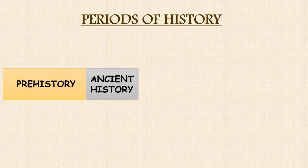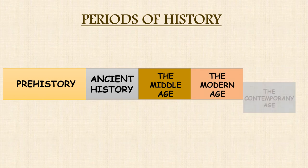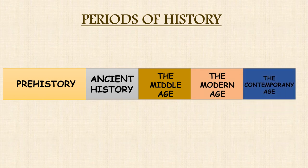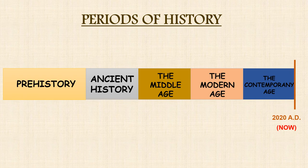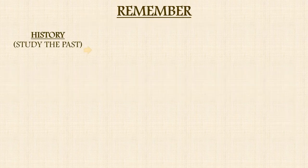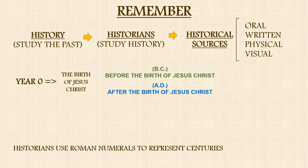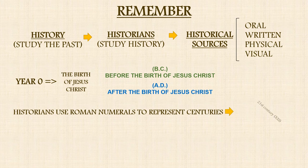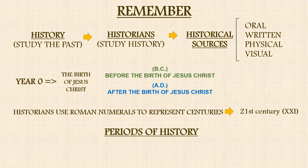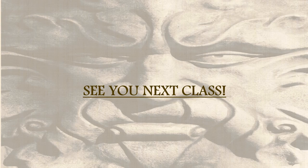The last thing you have to know today is that there are five periods of history: prehistory, history, the Middle Ages, the Modern Age, and the Contemporary Age. We are currently living in the Contemporary Age. Here you can find a mind map to help you remember the most important information from this video. Enjoy it, and see you next class!